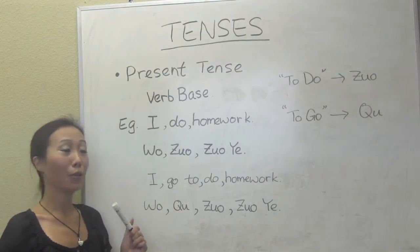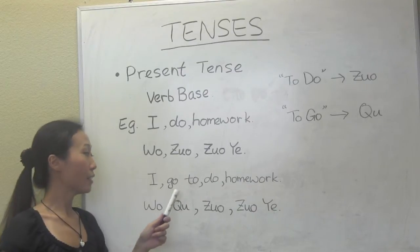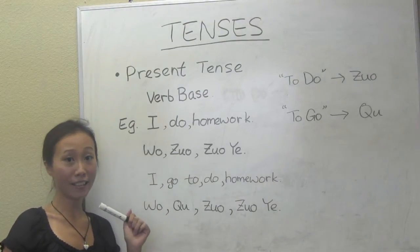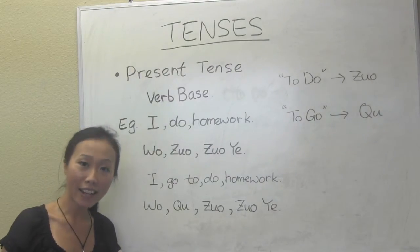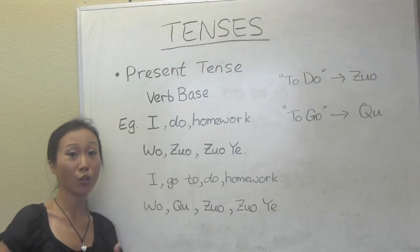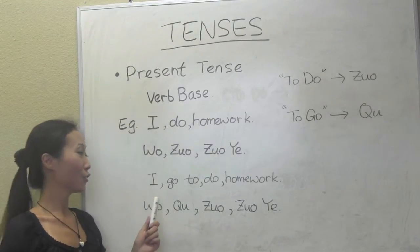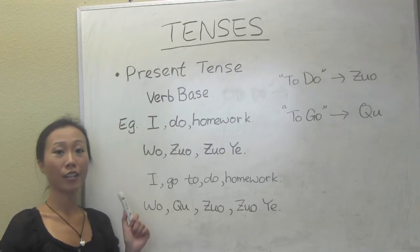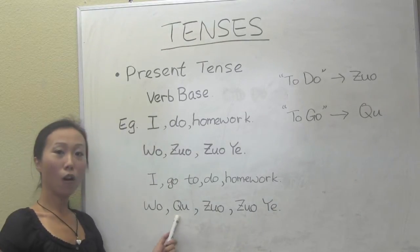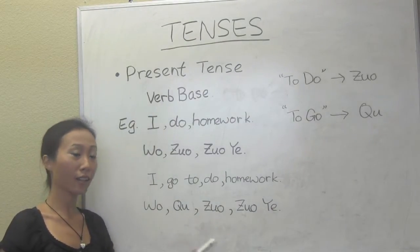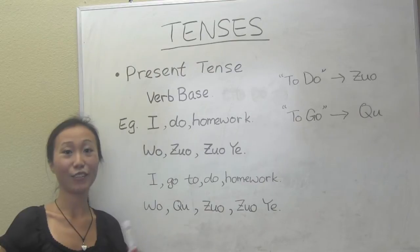Let's look at another example: 'I go to do homework.' In this case we have two verb bases. But in Chinese, we can just put them together without adding anything — unlike English where we add 'to' for infinity. Very simple. 'I go to do homework' in Chinese is 我去做作业. Basically it's 'I go do homework' — very simple.